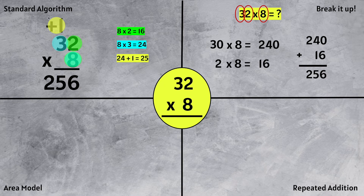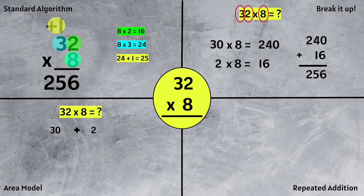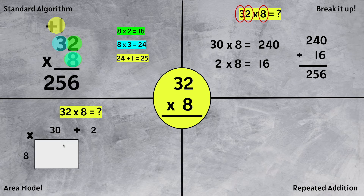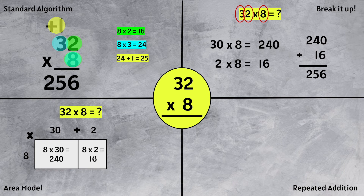We notice we get the same product using different strategies. Let's try the area model. We have 32 times 8. We can break up the 32 into 30 plus 2. Now let's multiply that by 8, distributing the 8 to the 30 and to the 2. Using a grid or area model: 8 times 30 is 240, because 8 times 3 is 24 and we add the 0. And 8 times 2 is 16. Taking 240 plus 16 equals 256.